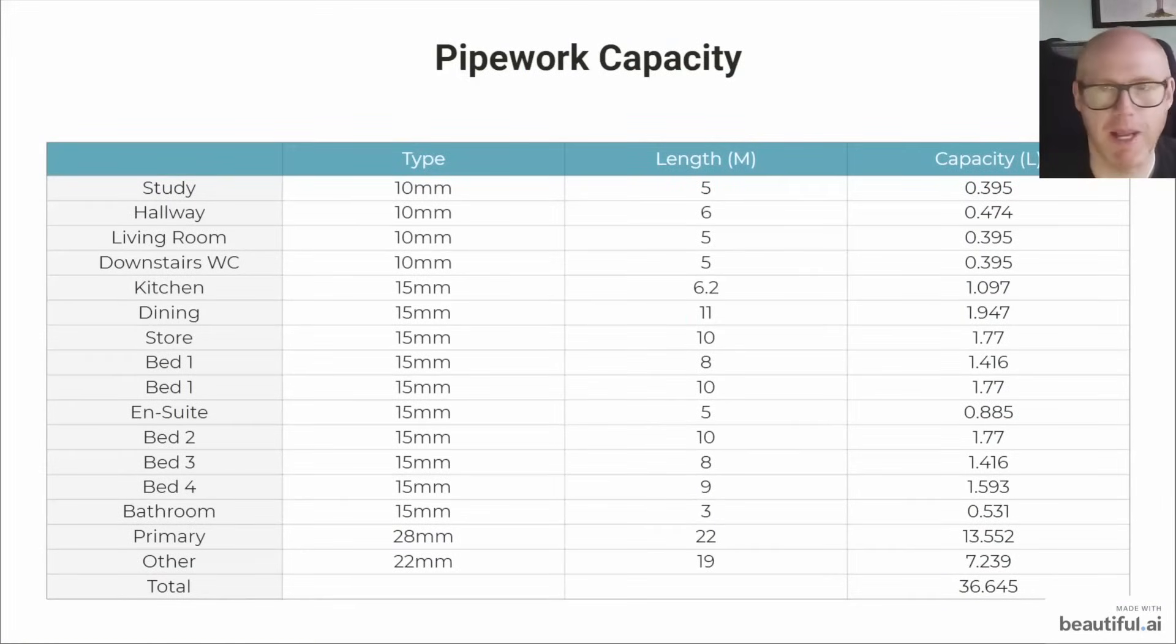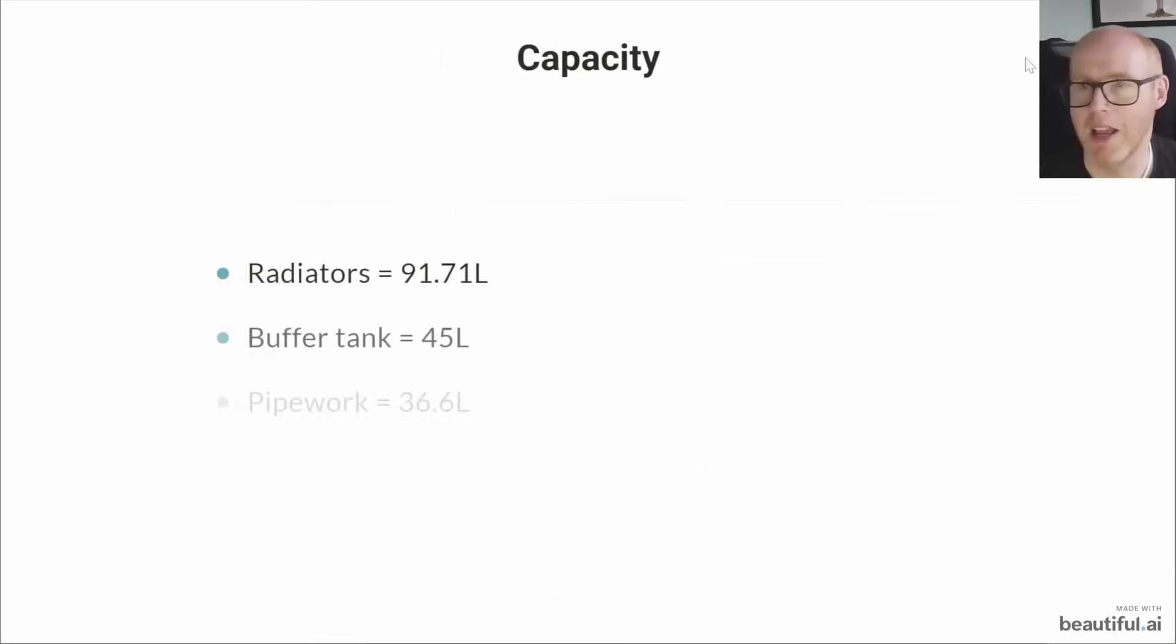Here's my pipework capacity. Once again these are all the radiators here, this is the pipework that runs to them, that's how long the pipework is, and then that equates to how much capacity there is. You can see my primary runs is 13 and a half litres in the 28 mil primary pipework, and that one was super easy to measure so I know it's very accurate. Some of these other ones I've erred on the side of caution, so this is a conservative estimate of 36.645 litres of water capacity in my pipework.